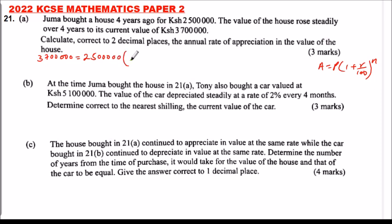It was appreciating at a rate which is what we want, so we say it is 1 plus R divided by 100, just as shown. And we multiply by the time it took to appreciate to that value, which is four years — that is n. So we divide: we can divide 3,700,000 by 2,500,000, or simplify by dividing by 100,000.